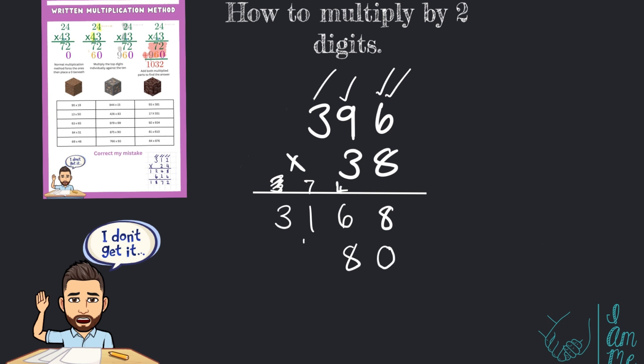Moving along. 9 times 3, 27. Add this 1 and I'm going to cross it off so I don't forget. 27 add 1, 28. 8 down. Carry the 2. Remember to tick the 9.